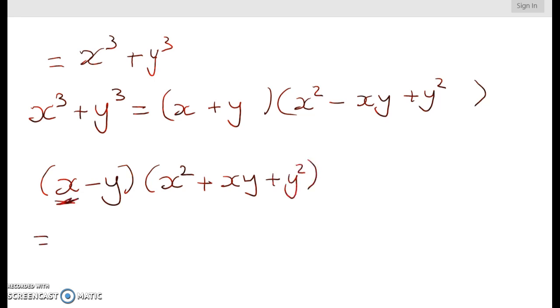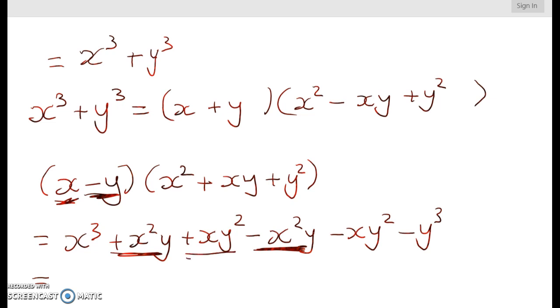So working first with the x term we get x cubed plus x squared y plus xy squared and now we're going to work through the y. So minus x squared y minus xy squared minus y cubed and you can see again that we've got a plus x squared y minus an x squared y and a plus xy squared minus xy squared. So that leaves me with x cubed minus y cubed.